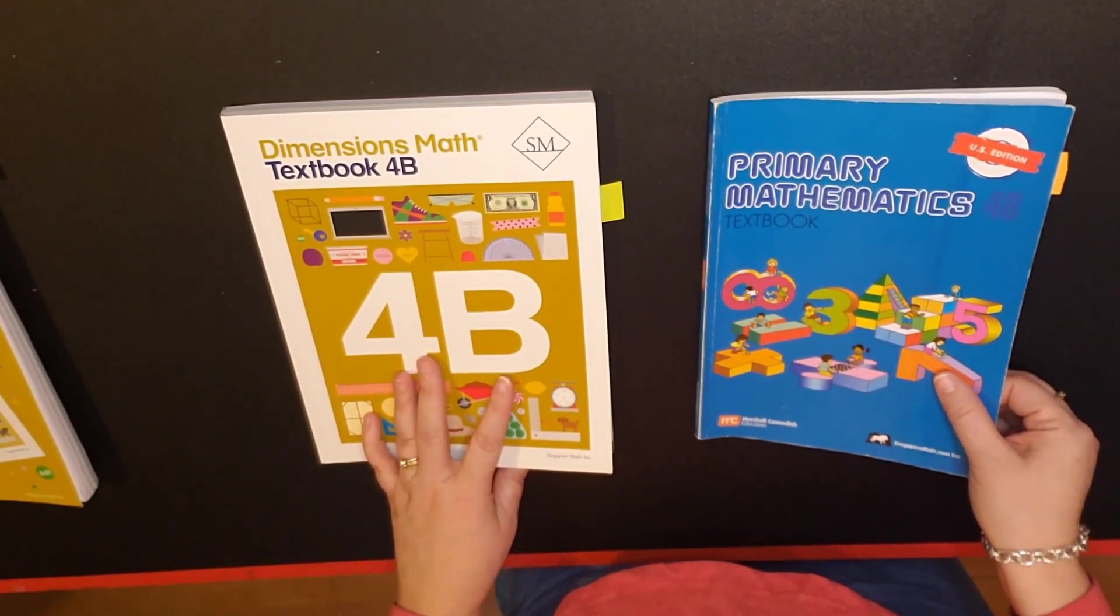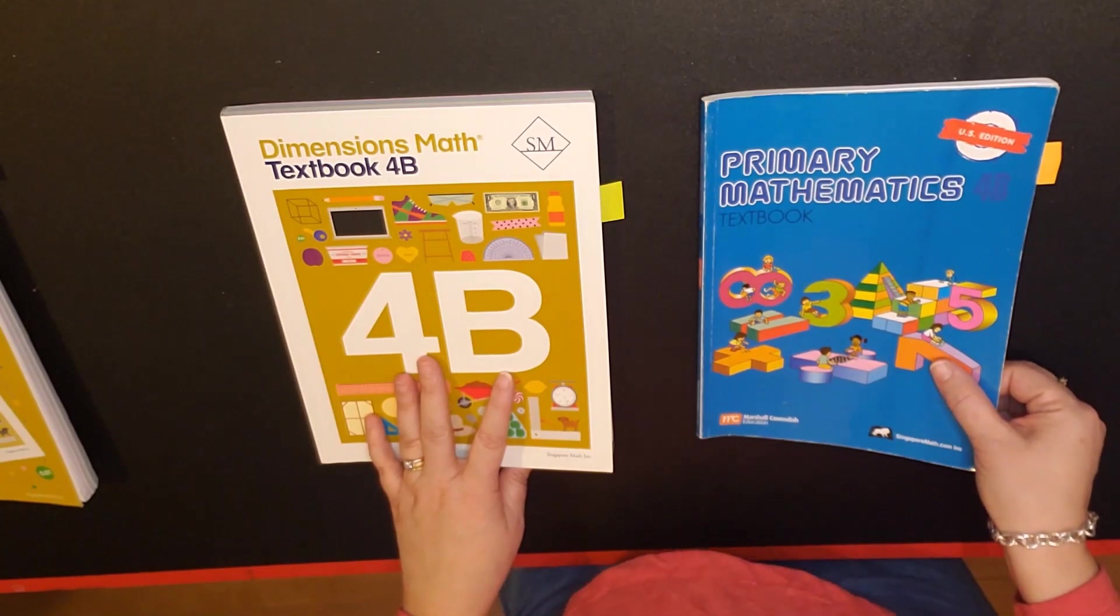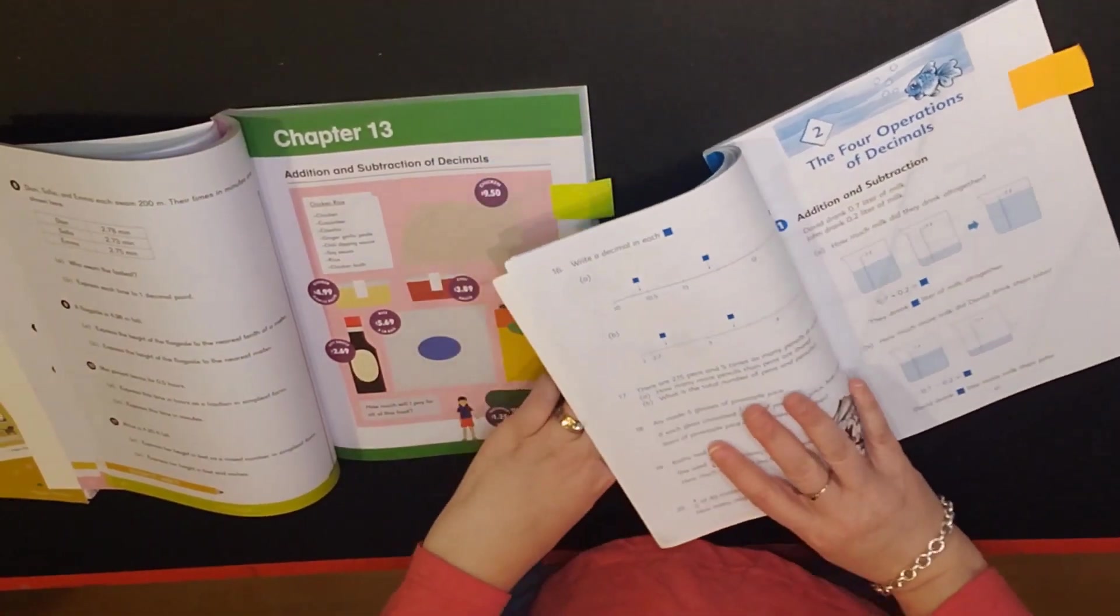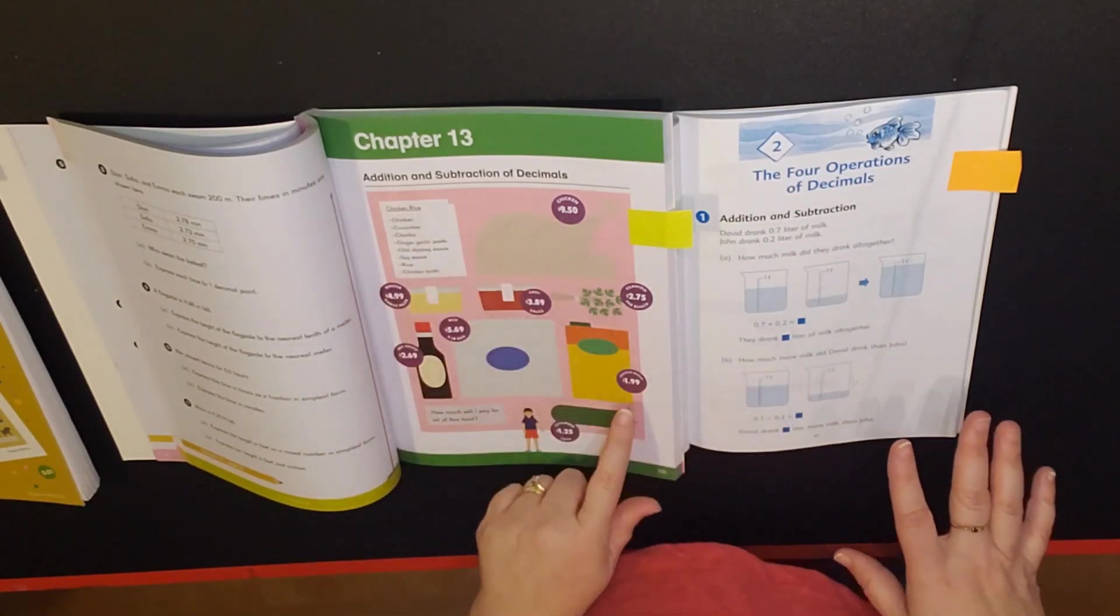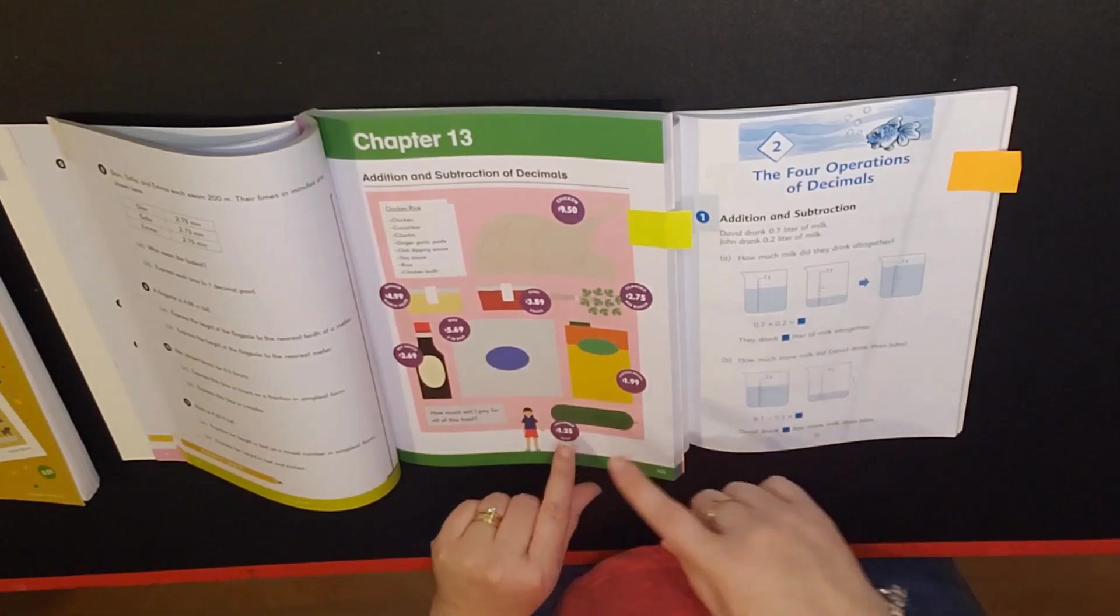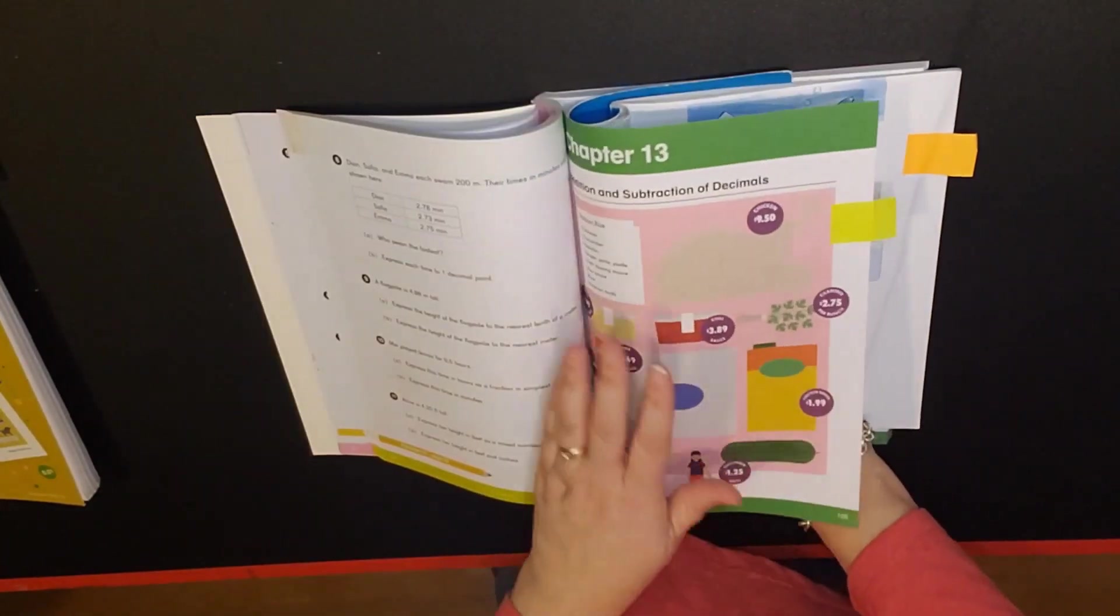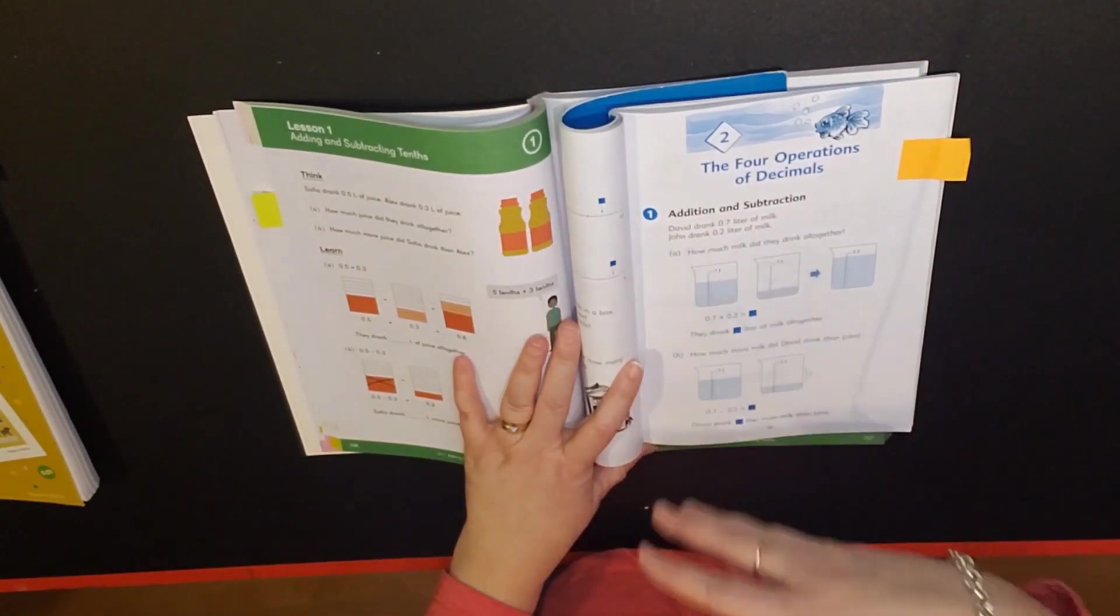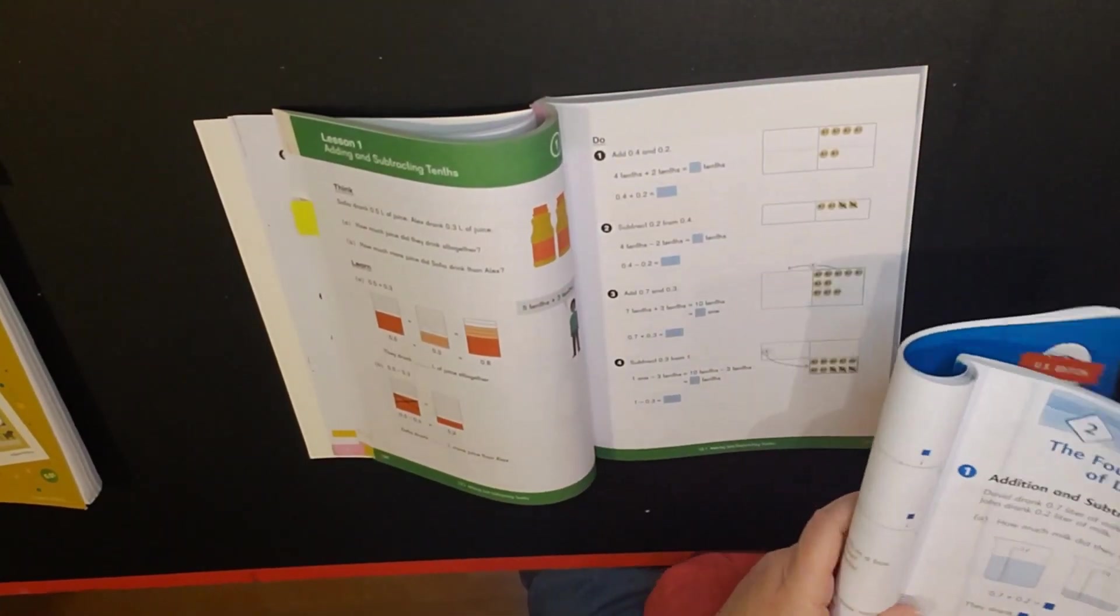Now I'd like to talk about specifically how they present the information differently to the students. We're going to talk about decimals. The introduction to decimals in dimensions is talking about money. You can see how they're saying okay money has decimals, how much do I have to pay if I buy all of these, so it's more of a real-world example. Primary basically doesn't have this page but it then goes into the same question of two people drank two different quantities, how much did they drink. That is how both of them present decimals initially.